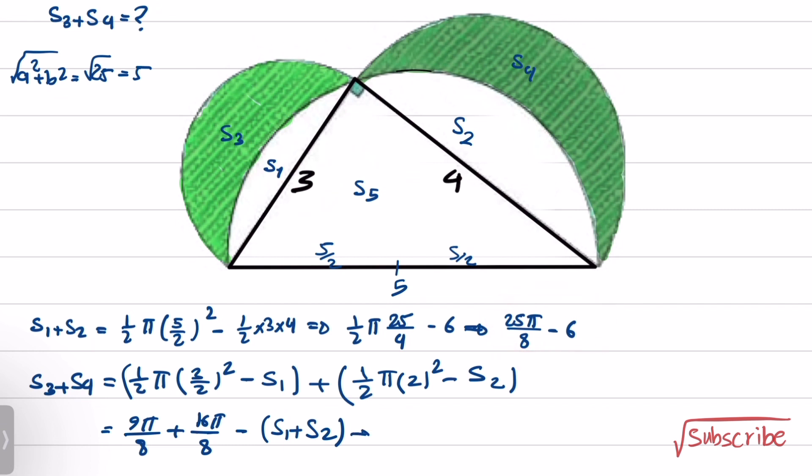We can further simplify this: it will be 25π/8 minus 25π/8 plus 6. These cancel out, and the final answer is 6.